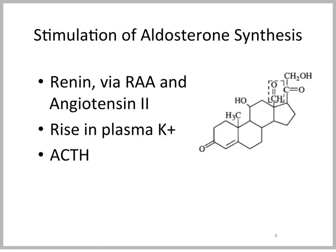So what stimulates aldosterone synthesis? Renin via the renin-angiotensin-aldosterone system, and angiotensin 2, which is the final product that stimulates via receptors on the adrenal cortex. Anything that can lead to a rise in plasma potassium will stimulate aldosterone, as will ACTH — so there's some ACTH regulation with regards to the synthesis of aldosterone itself.